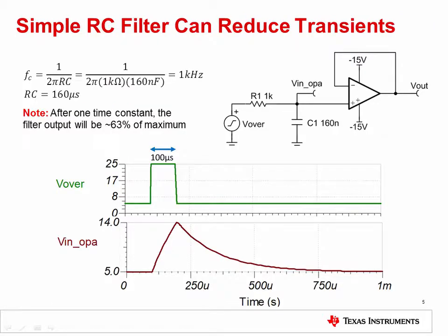We discussed in EOS part one that EOS events can be long events of milliseconds or more. However, EOS events can also be short transient pulses of high voltage. In these cases, a simple RC low pass filter can help minimize the input transient. This example considers an EOS event at the input of an op amp circuit. An RC low pass filter is placed on the input with a cutoff frequency of 1 kilohertz, and therefore a time constant of 160 microseconds. A general rule of thumb for RC circuits is that the filtered voltage will reach 63% of full value after one time constant, and will be nearly fully charged at five time constants.